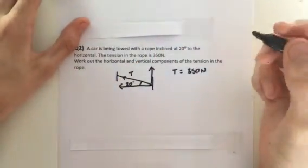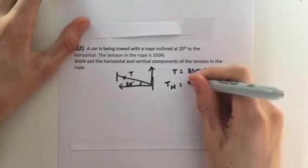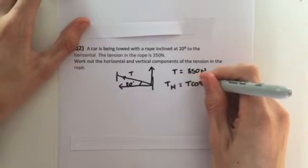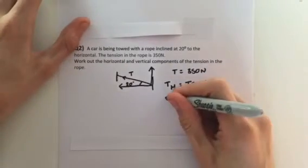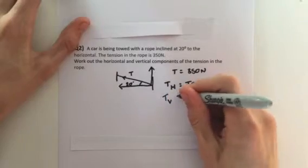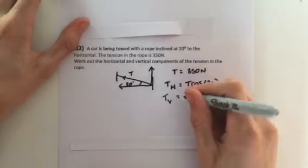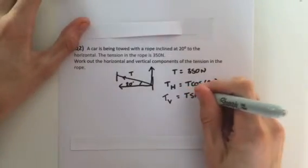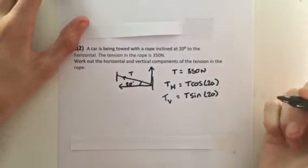So we have our vertical component of T and our horizontal component of T. Our horizontal component of T, TH, is equal to T cosine theta, which is 20 degrees. TV, the vertical component of the tension, which is this one here, is going to be T sine of 20 degrees.